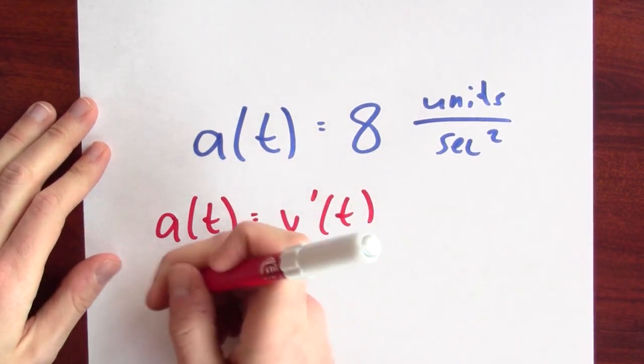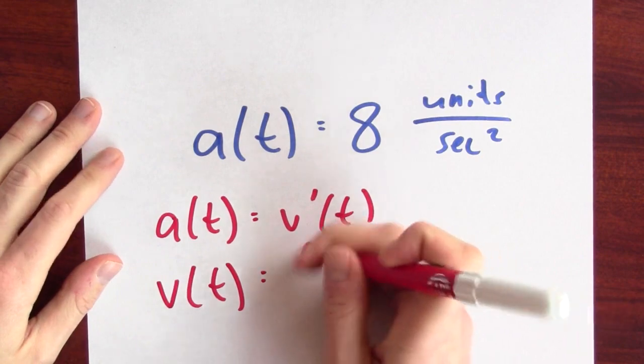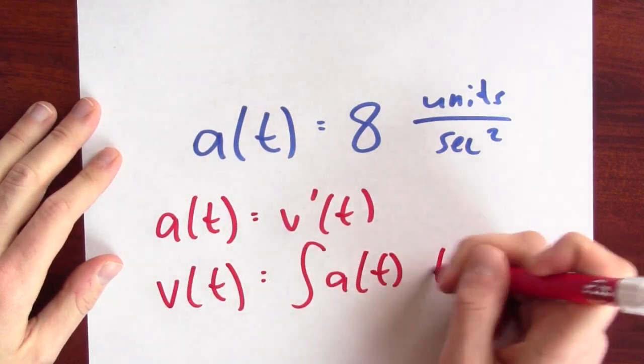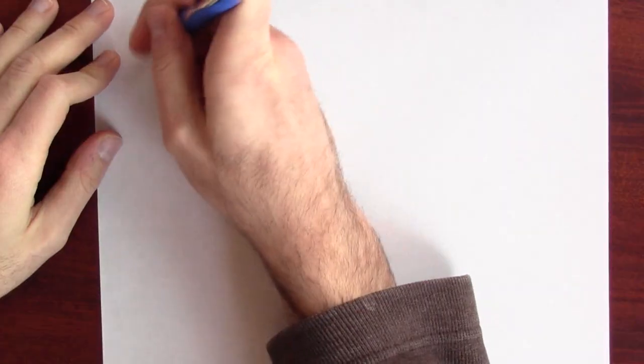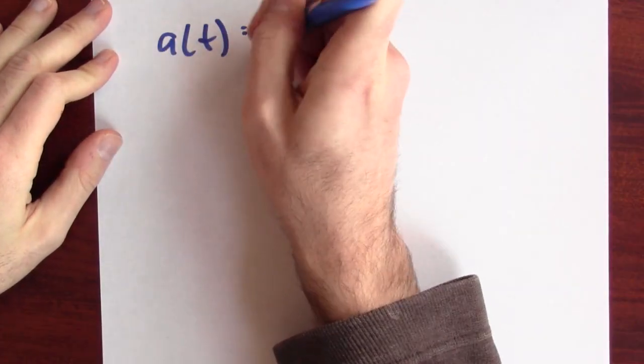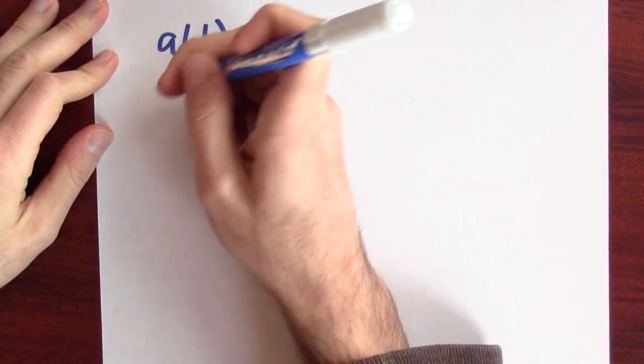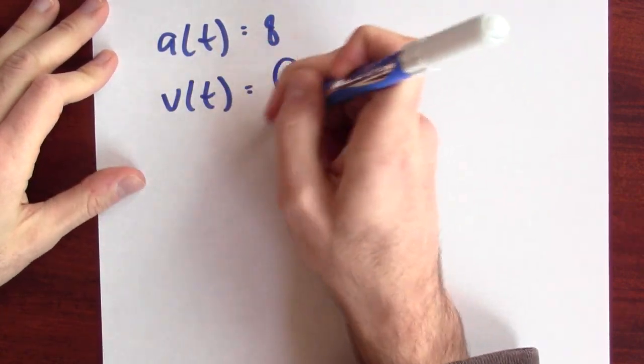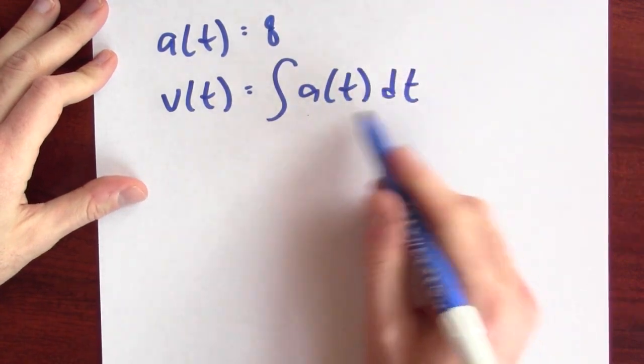Or in other words, velocity is an anti-derivative of acceleration. So I know that a of t is 8. Let's now solve for v. So a of t, my acceleration is just constant function 8, and v of t is the anti-derivative of my acceleration.